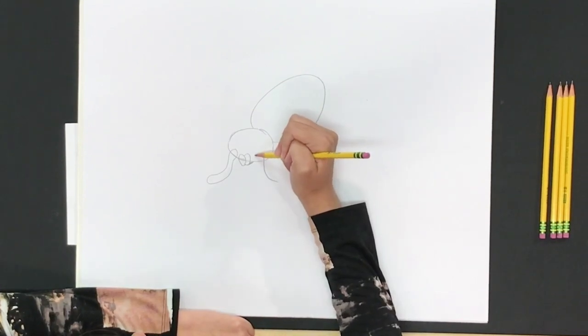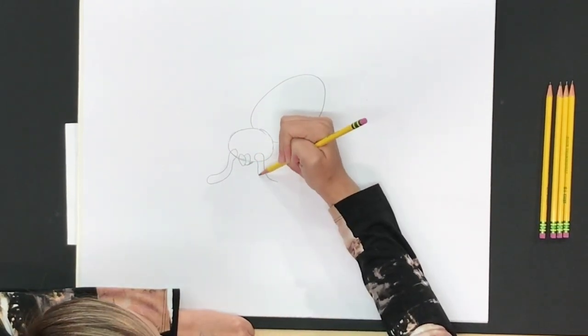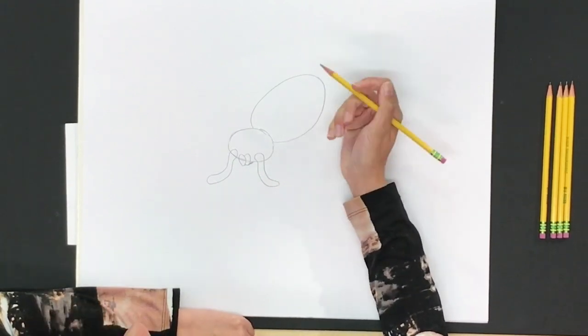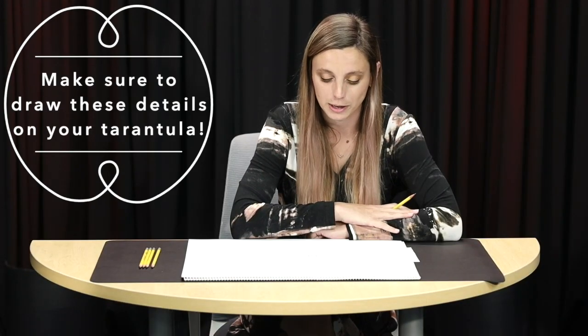Now these features are especially important for tarantulas such as the bird eating goliath or the goliath bird eating tarantula. Some tarantulas have been known to eat small animals like snakes and birds so these limbs are especially important features.